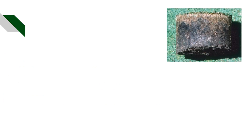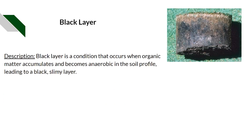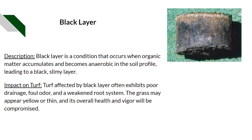What is this turf disorder? Black layer. Black layer is a condition that occurs when organic matter accumulates and becomes anaerobic in the soil profile, leading to a black, slimy, smelly layer.